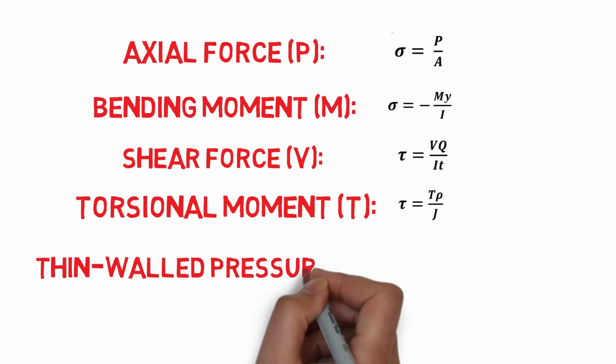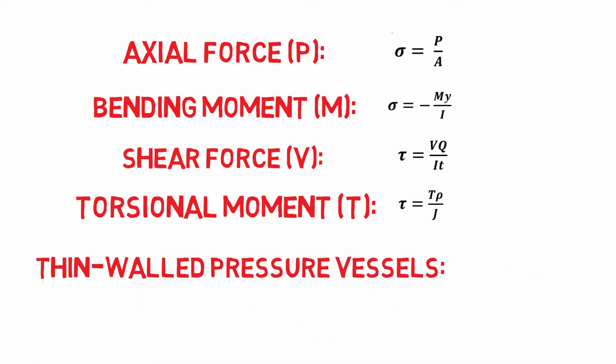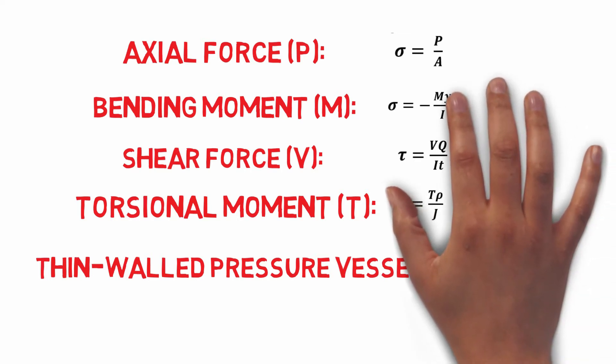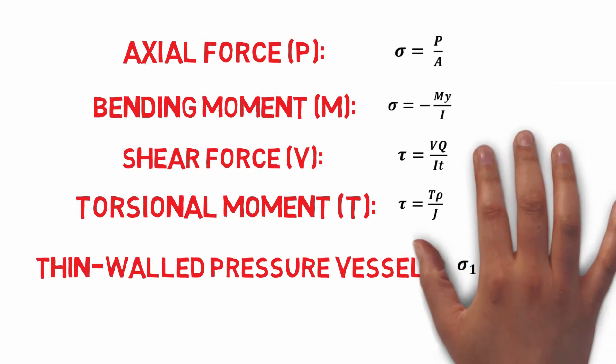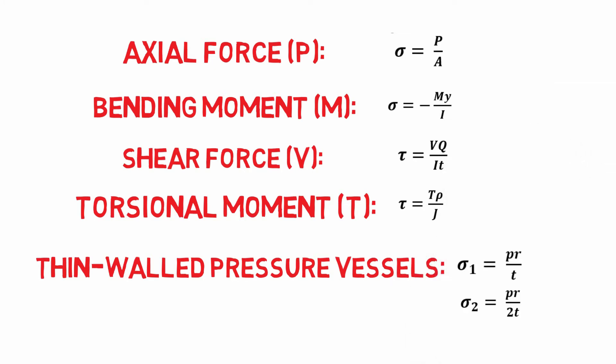Also, we learned how to deal with thin-walled pressure vessels. If the vessel is thin-walled with cylindrical shape, then the internal pressure P will cause a biaxial state of stresses: sigma 1 equals PR over T, and sigma 2 equals PR over 2T, hoop and longitudinal stresses respectively.